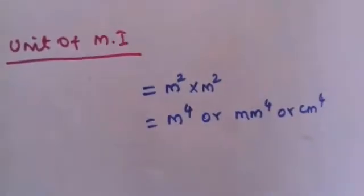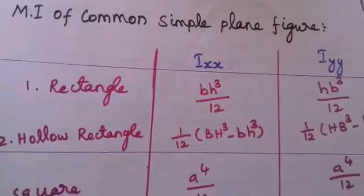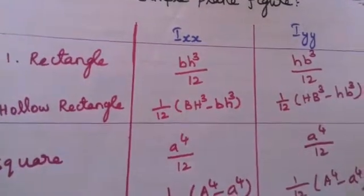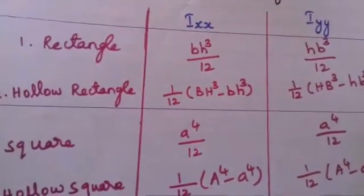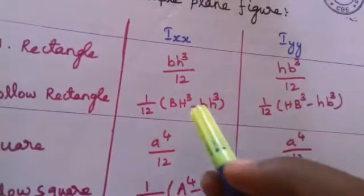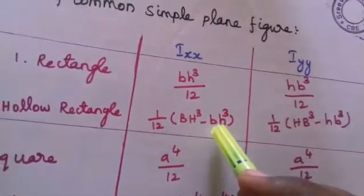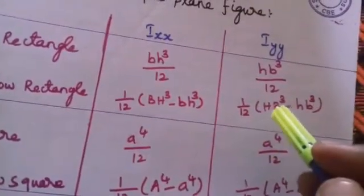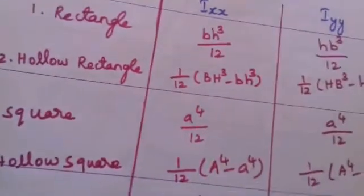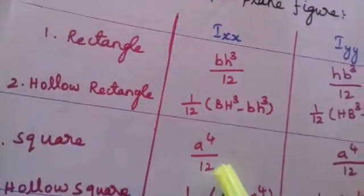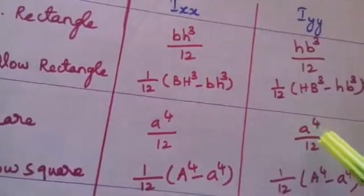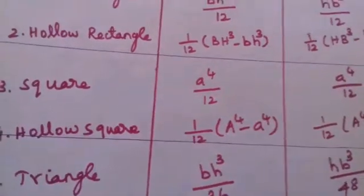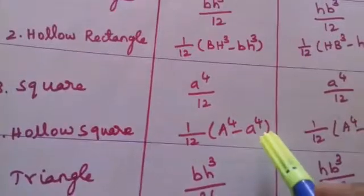Then moment of inertia of common simple figures, that is rectangle: Ixx is bhq by 12 and Iyy is hbq by 12. Hollow rectangle: 1 by 12 bhq, that is bhq minus small bhq. Square: a power 4 by 12 and Iyy same a power 4 by 12. Hollow square: that is 1 by 12 into capital a power 4 minus small a power 4. Both are same.